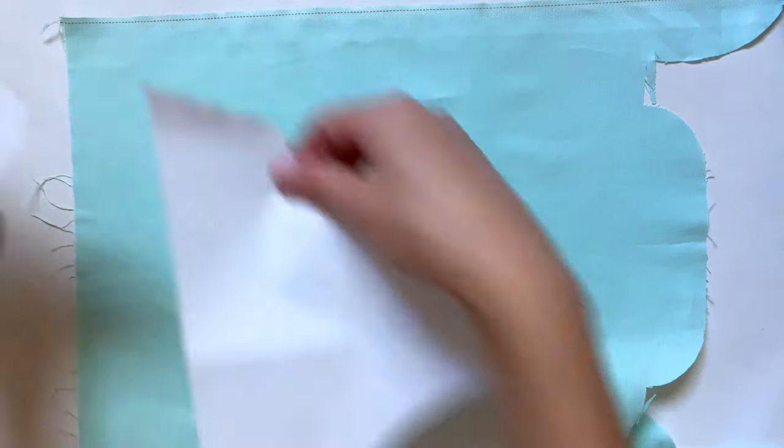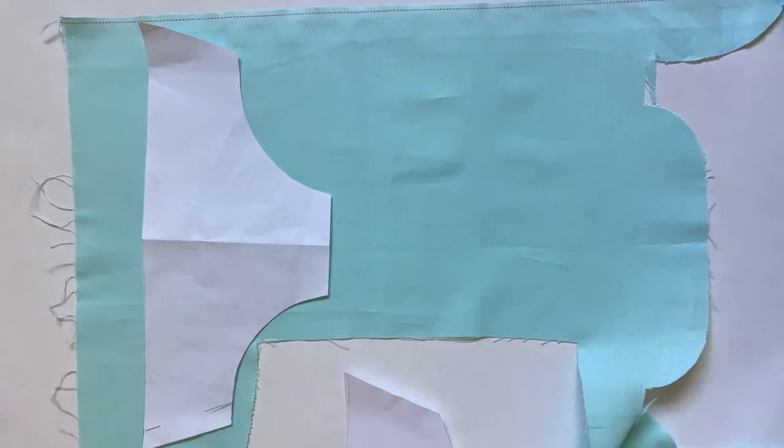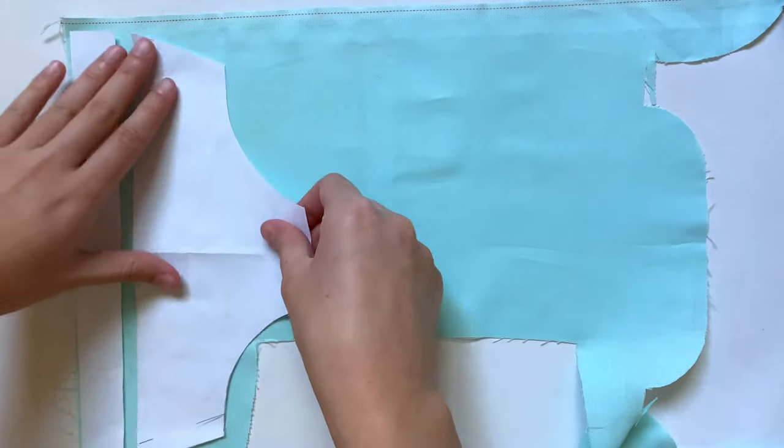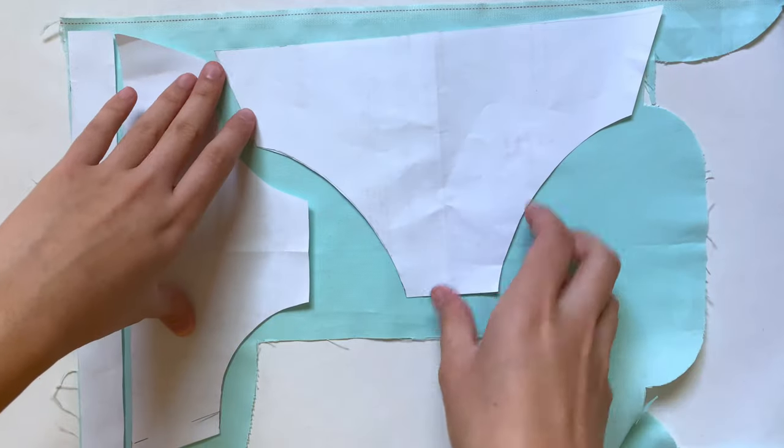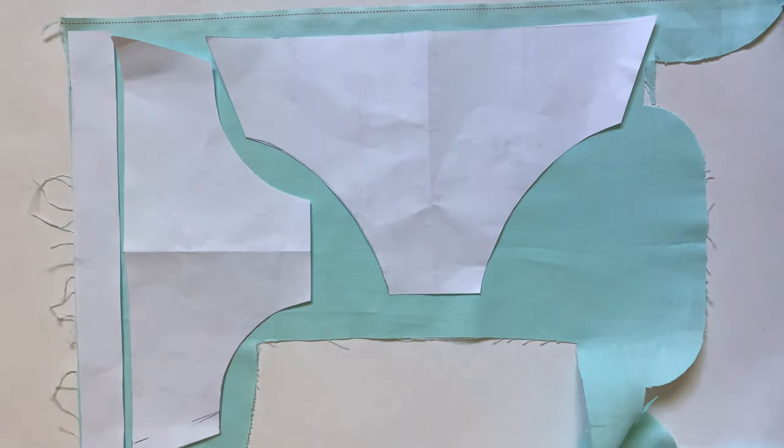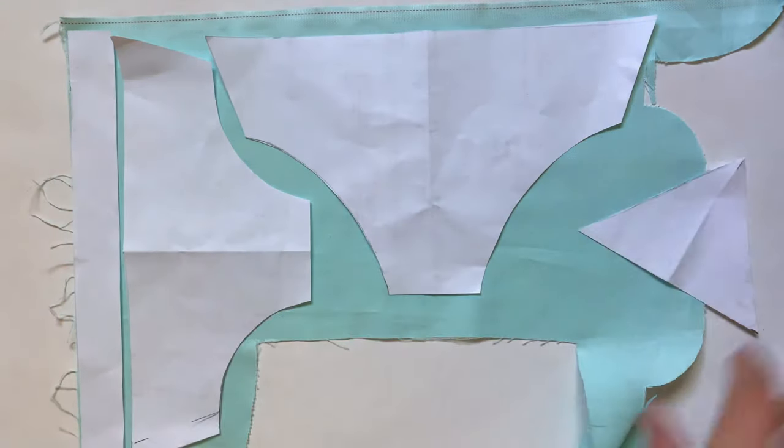The first thing to do is cut out my pieces. Since I've already used some of this fabric I don't have much to work with, so I have to be very strategic when placing my patterns. You can find these patterns I made in the description box below.